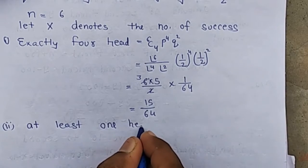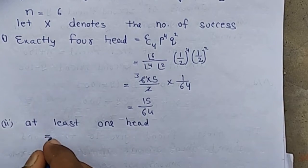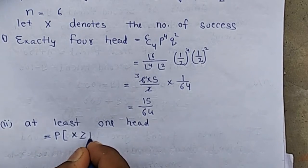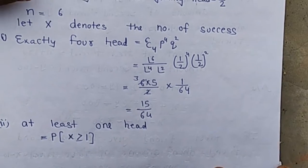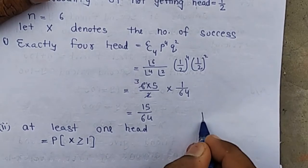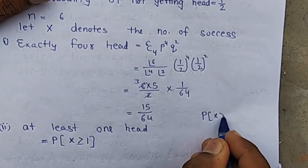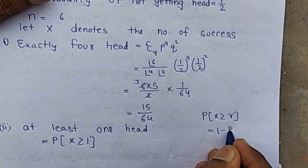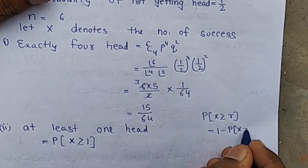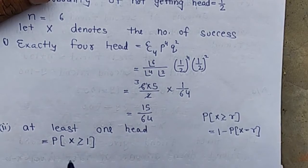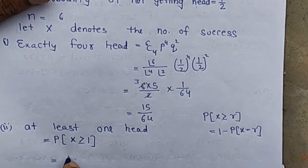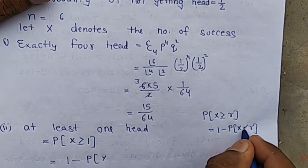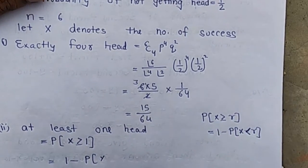For at least 1 head, X ≥ 1. We use the formula: P(X ≥ R) = 1 − P(X < R). So P(X ≥ 1) = 1 − P(X < 1).